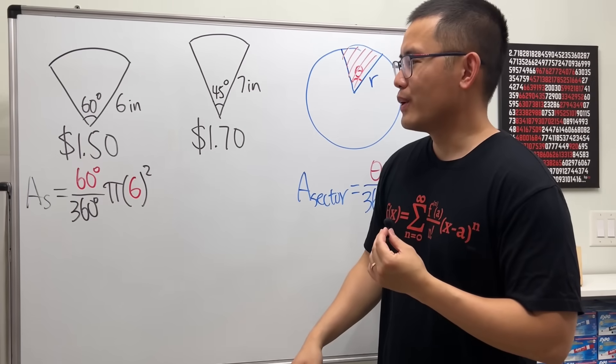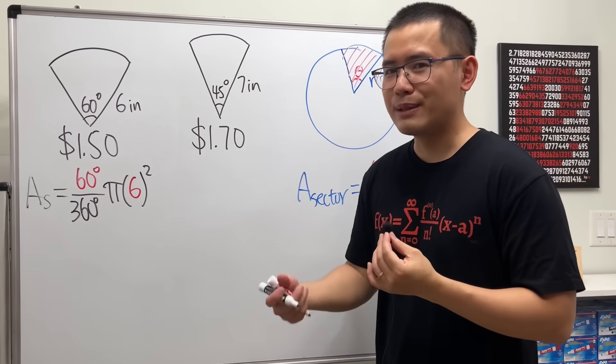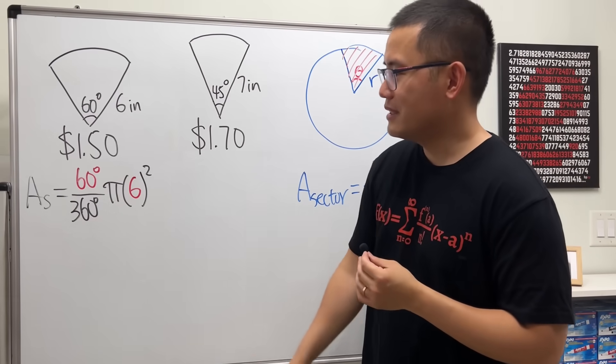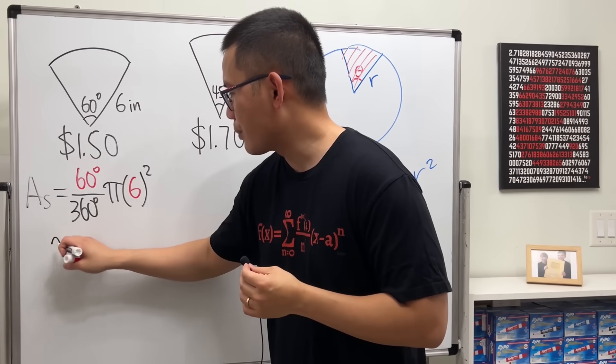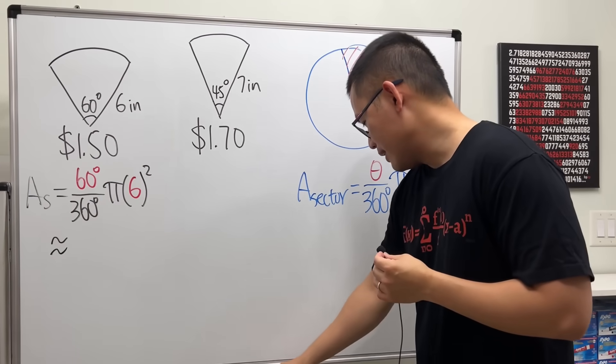And then of course we can just use the calculator because you have to get some decimal numbers to get a better understanding of how big this is. I will tell you this right here is approximately, yes I wrote down the answer right here, so I will tell you 18.85 inches squared.